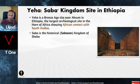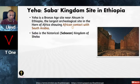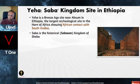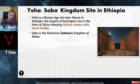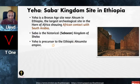I'll start off with Yeha, the Sabaean Kingdom site in Ethiopia. Yeha is a Bronze Age site near Aksum in Ethiopia — the largest archaeological site in the Horn of Africa — showing African contact with South Arabia. Sabaean is the historical Sabaean kingdom of Sheba; we've all heard of the Queen of Sheba. Yeha is the precursor to the Ethiopic Aksumite Empire, which was at that time the fourth most powerful empire on earth — and yet one you've never heard of.